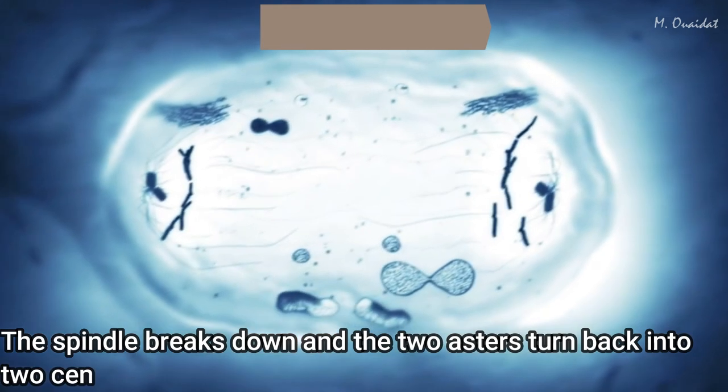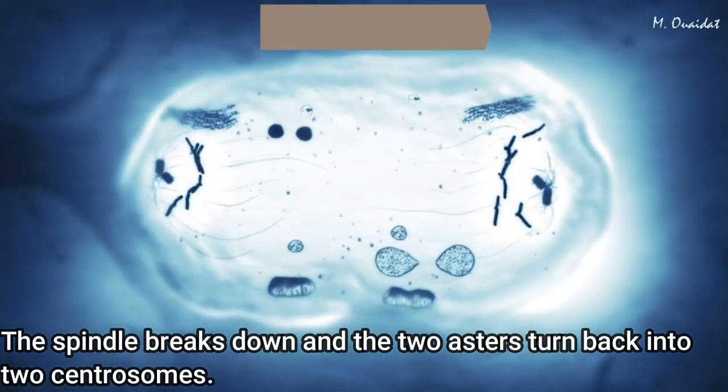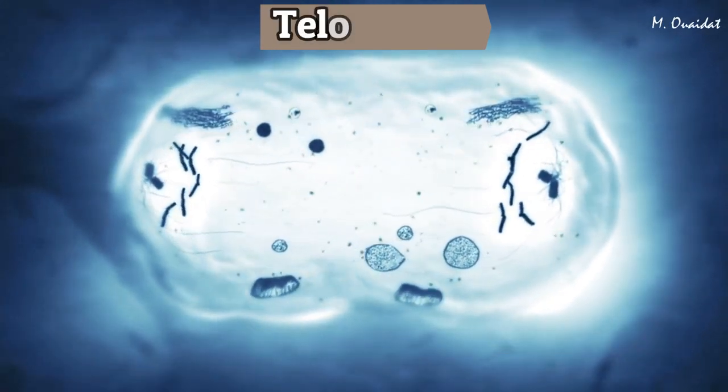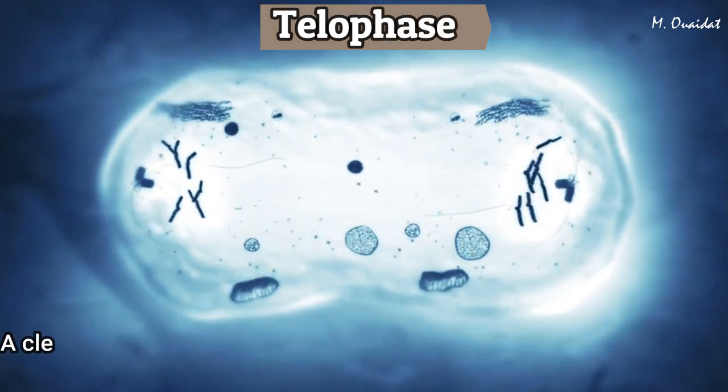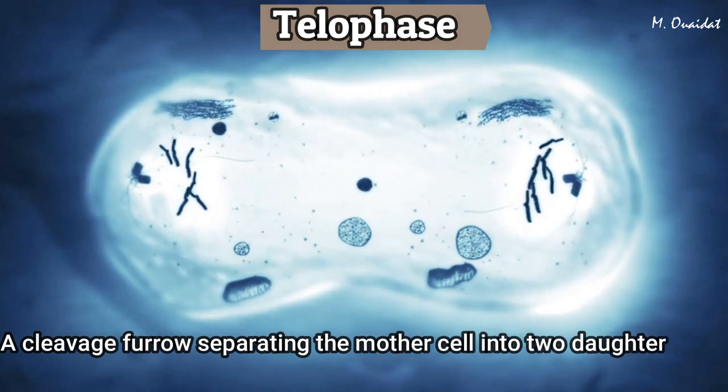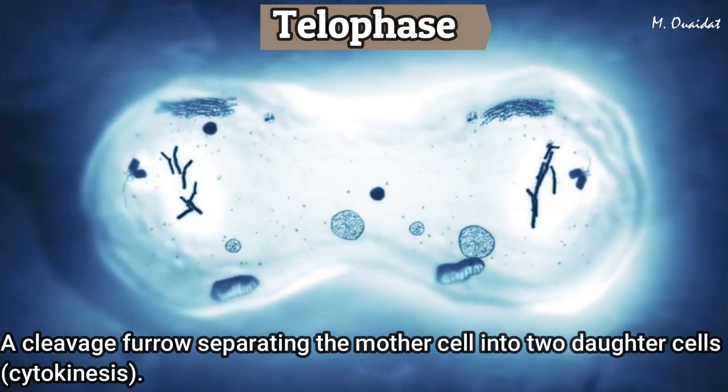In telophase, the spindle breaks down and the two asters turn back into two centrosomes. The nuclear membrane and the nucleoli reappear. A cleavage furrow separates the mother cell into two daughter cells.